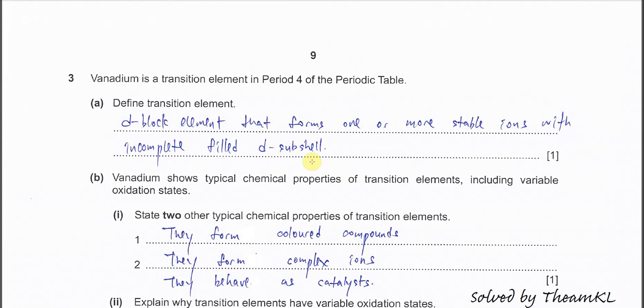Question 3. Vanadium is a transition element in period 4. Part A: Define transition element. D-block elements that form one or more stable ions with incomplete filled d subshell.